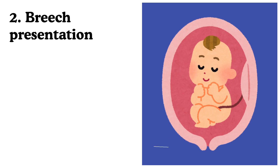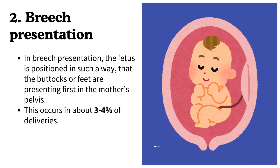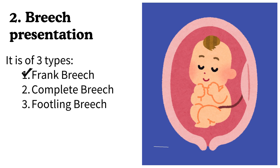Number 2: Breech presentation. In breech presentation, the fetus is positioned in such a way that the buttocks or feet are presenting first in the mother's pelvis. This occurs in about 3 to 4 percent of deliveries. It is of three types: frank breech, complete breech, and footling breech.